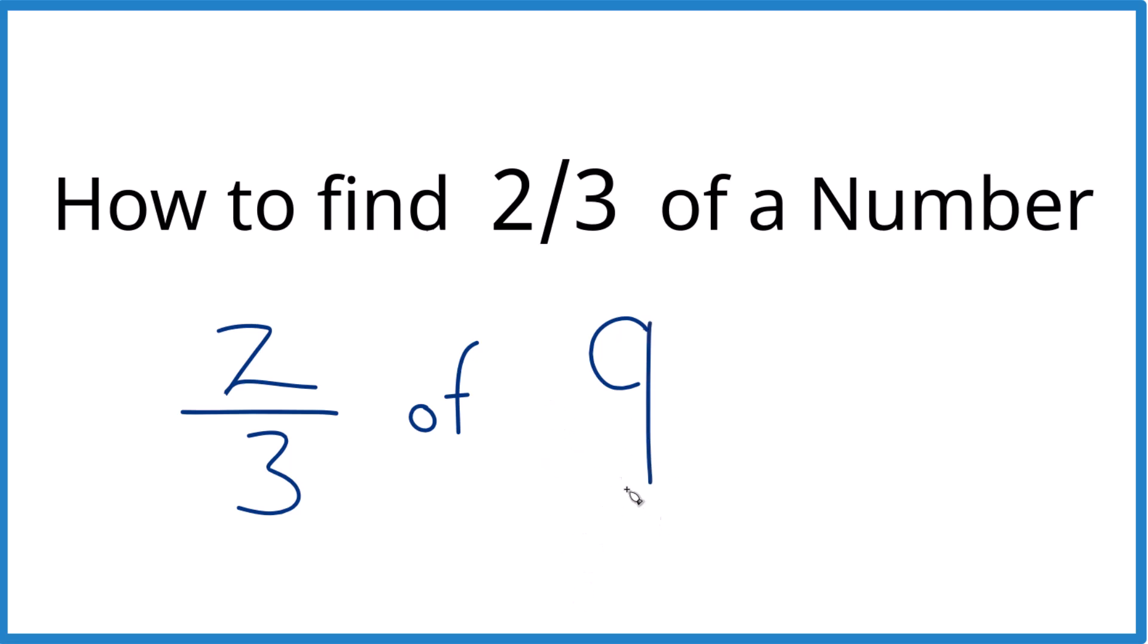First, the math way. What we could do instead of of, we can just call this times. We're going to multiply two-thirds times nine.